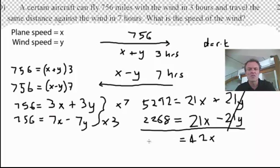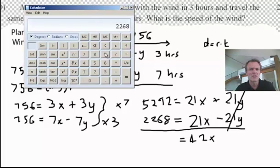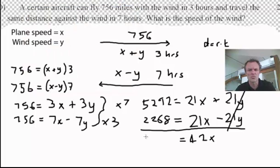So, I'm left with 42x. Now, I still need to know what 5292 and 2268 is. So, 2268 - let's add 5292. That will equal 7560.